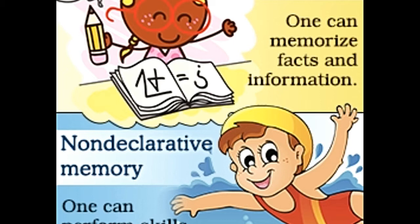Non-declarative memory is also a part of long-term memory, which stores or learns things without consciously putting in effort. The process is unintentional, and the person can perform actions at any given time without actually trying to recall the activity. This memory learns skills automatically without the knowledge of the individual, hence being also known as implicit memory. Example: skills of riding, driving, swimming, etc.